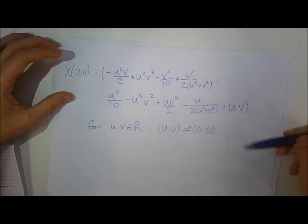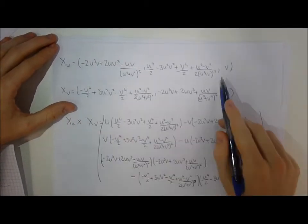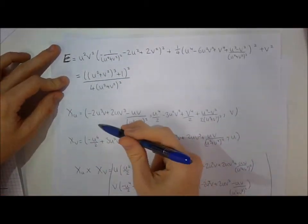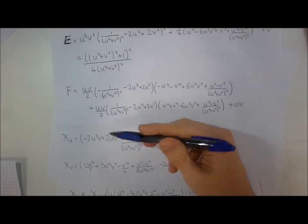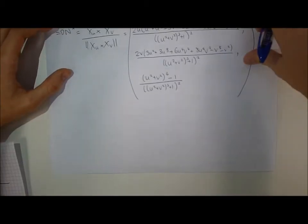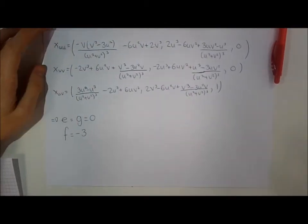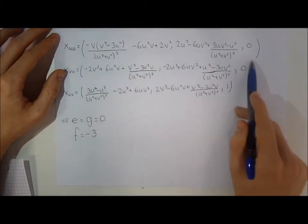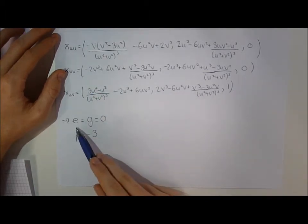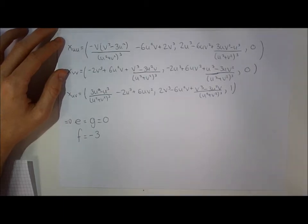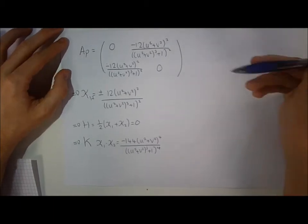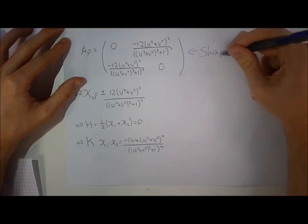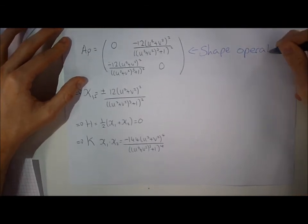Using our surface, we can find x_u, x_v and the cross product of x_u and x_v to find E, F, and G. Then we find our Gauss map. We then find x_uu, x_uv, and x_vv and plug those into our equations to find lowercase e, f, and g, given by 0, 0, and -3. Once we have done this we can find our shape operator and the mean curvature and Gauss curvature.